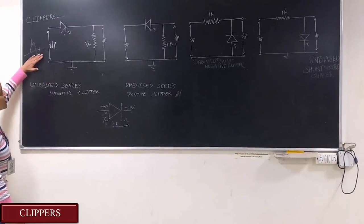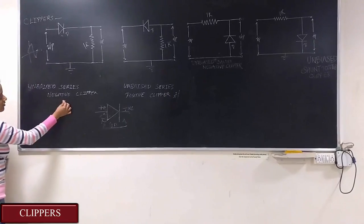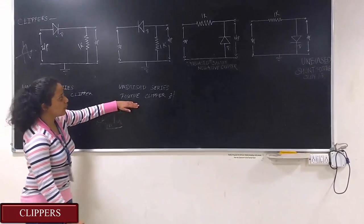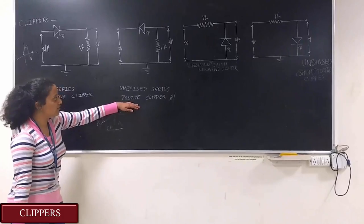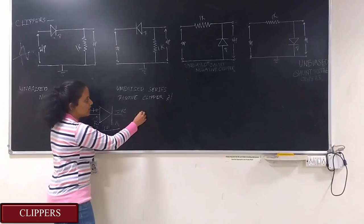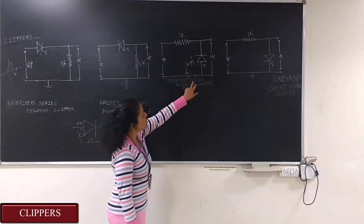That is why the negative side is clipped and this is what happens in negative clipper. Exactly the opposite happens in positive clipper where the positive side is clipped and the negative side is not clipped. Now this is a shunt clipper.